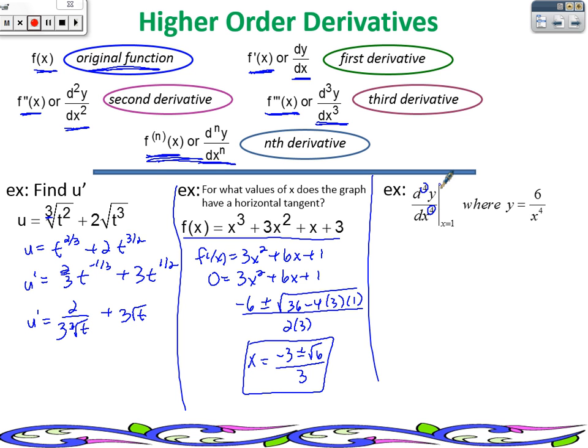hopefully from looking at this notation, you know what they're asking. They're asking us to find the fourth derivative. Now this little line right here means evaluated at x equals 1. So we're going to find the derivative and